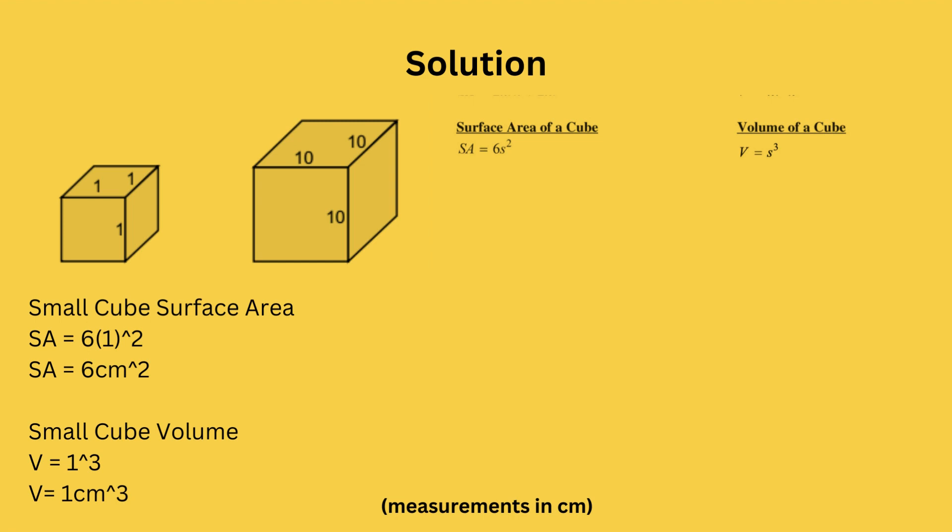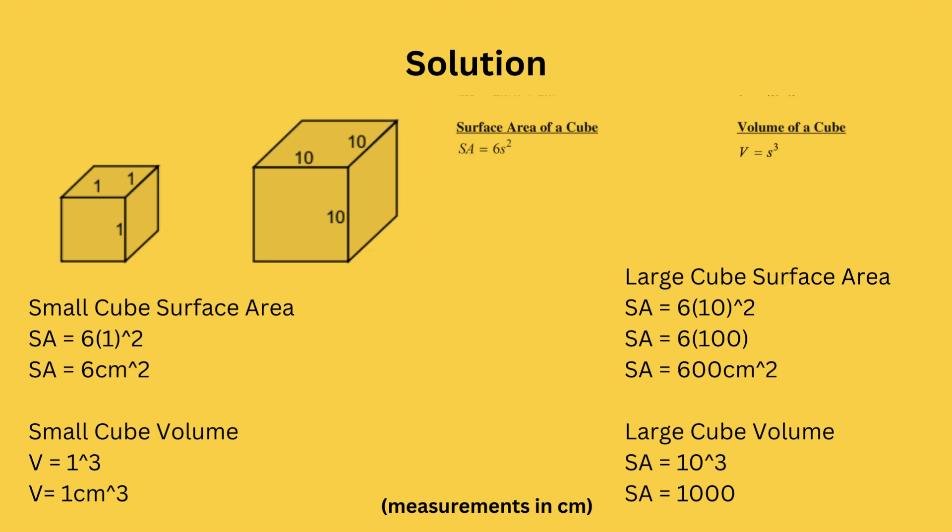Now we'll do the same for the bigger cube. And now we can take both the surface area and volume of each cube and present it in the ratio of surface area to volume. After simplifying, you can see that the ratio is higher in the smaller cell and lower in the bigger cell.